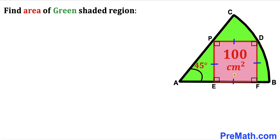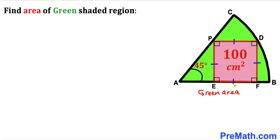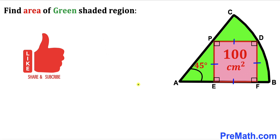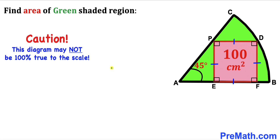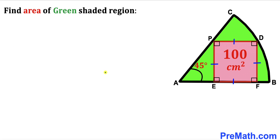Welcome to pre-math. In this video we have a square DPEF fully confined in a sector ABC, such that the area of this square is 100 centimeters square and angle BAC is 45 degrees. Our task is to calculate the area of the green shaded region. Please keep in mind that this figure may not be 100% true to scale. Let's go ahead and get started.